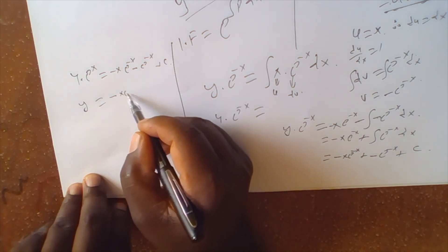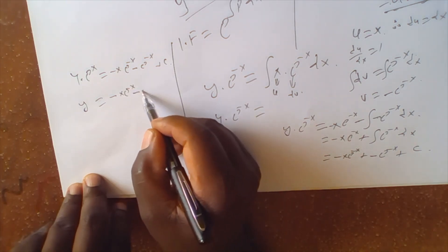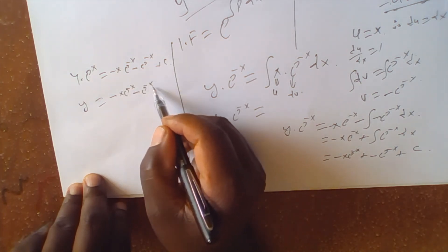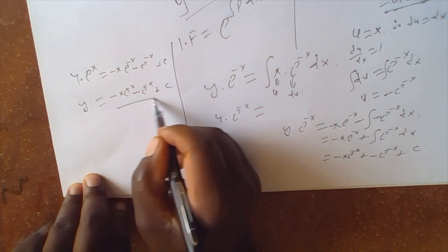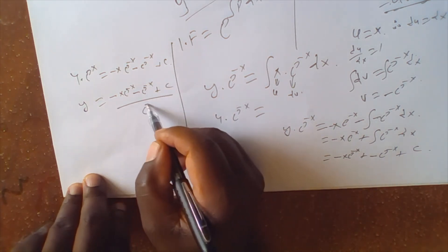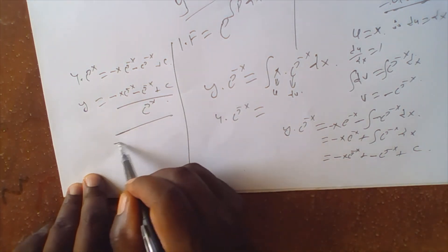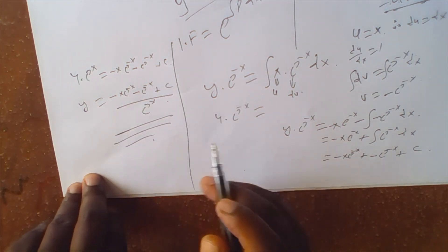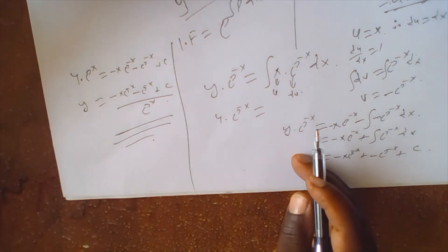So y equals negative 2x e to the negative x minus e to the negative x plus C, all divided by e to the negative x. Thank you for watching, bye bye.